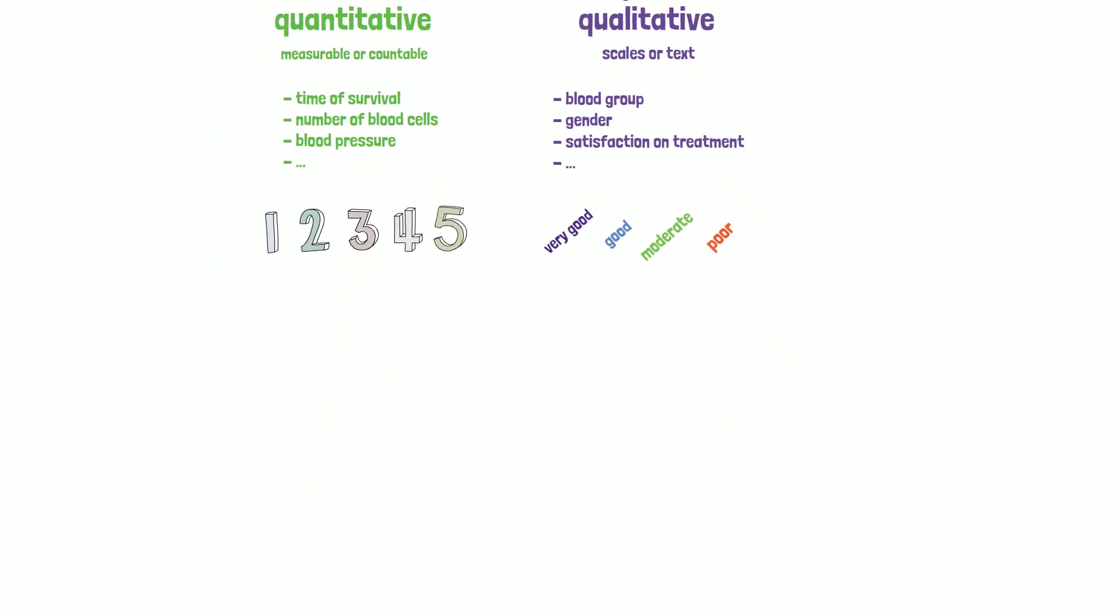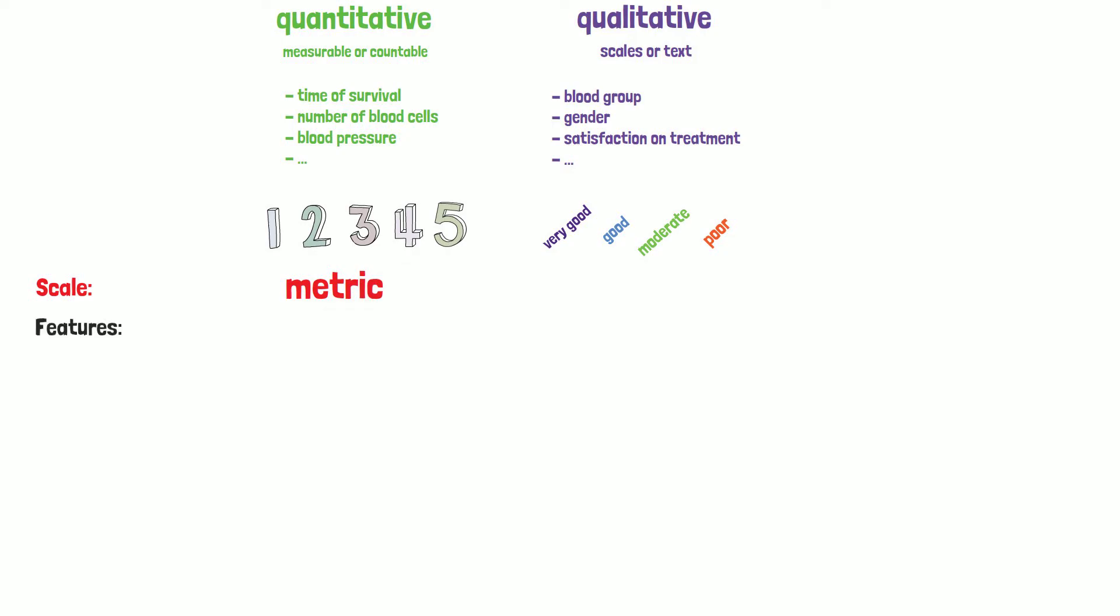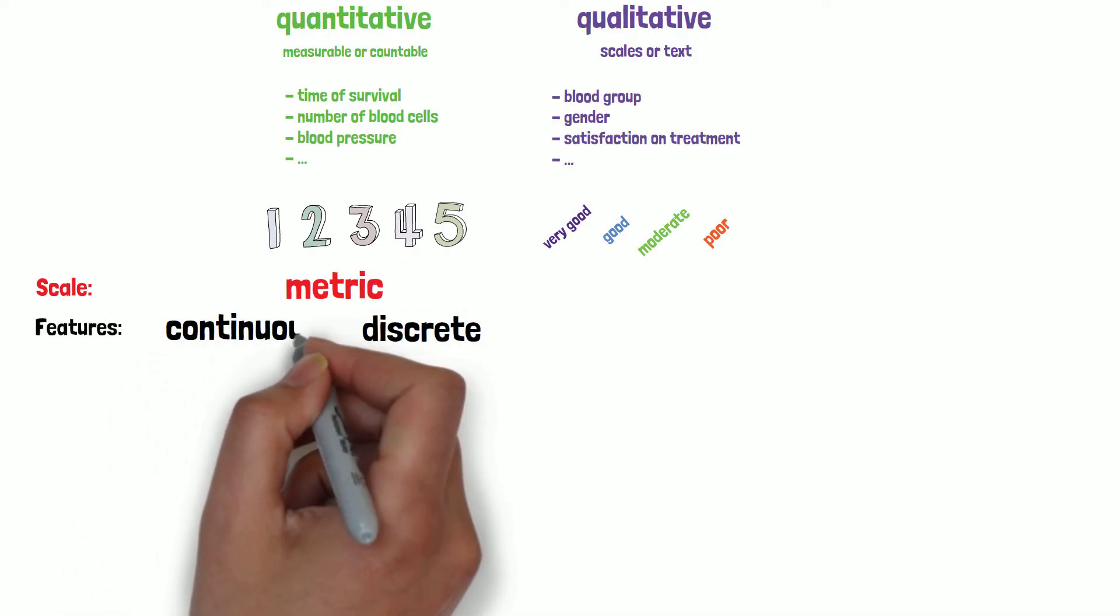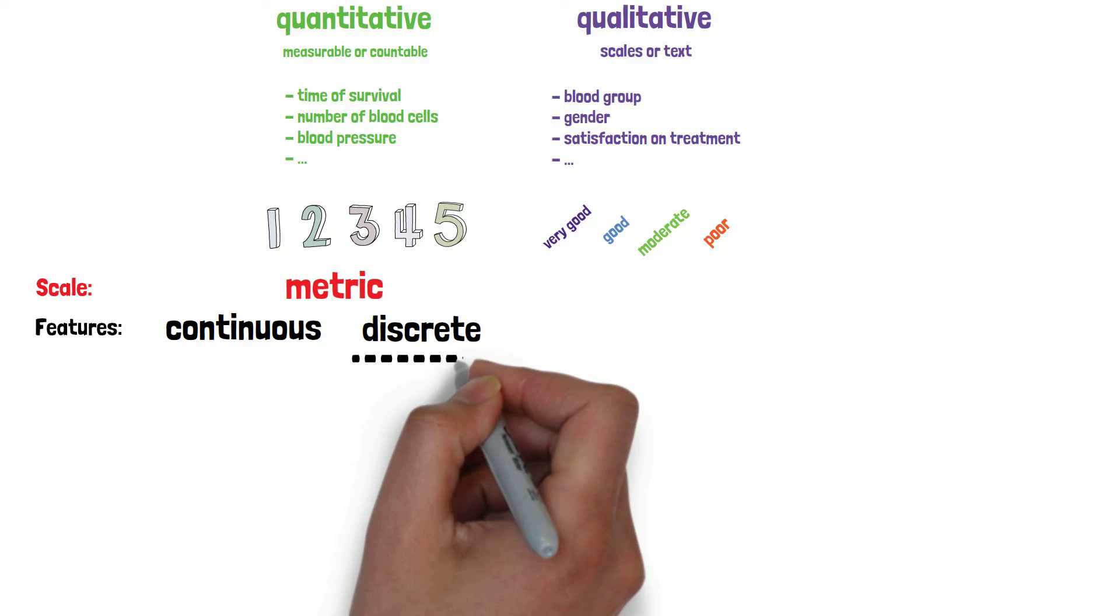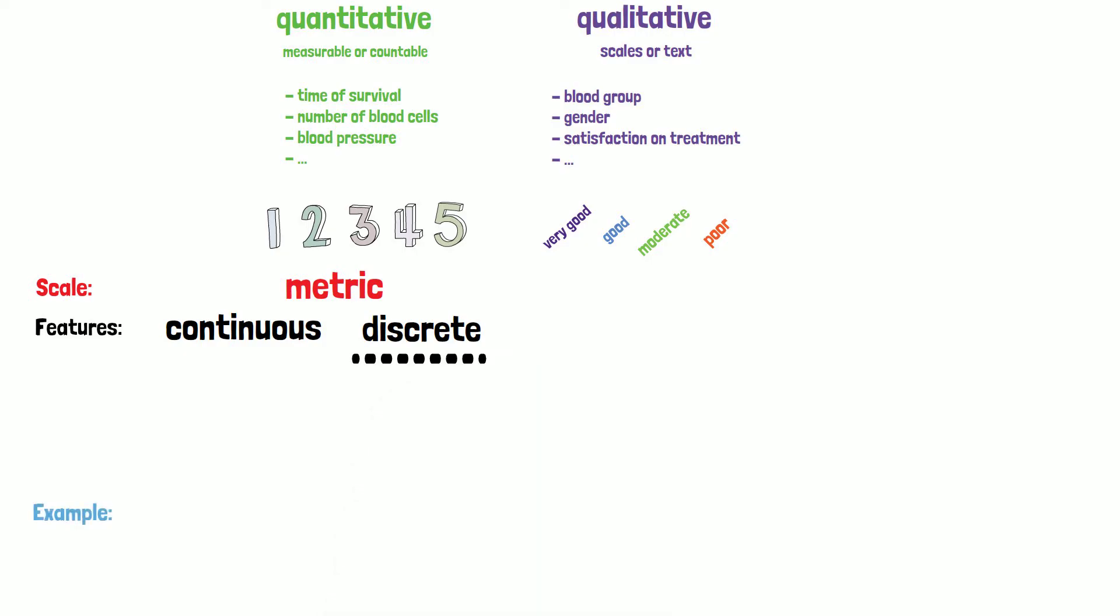Quantitative variables are all in the scale of metric variables. We distinguish between discrete and continuous data here. Discrete are all counting variables that have only integers, such as number of children in a family. Continuous variables, on the other hand, can assume all values, including decimal numbers, like size or weight of a person.